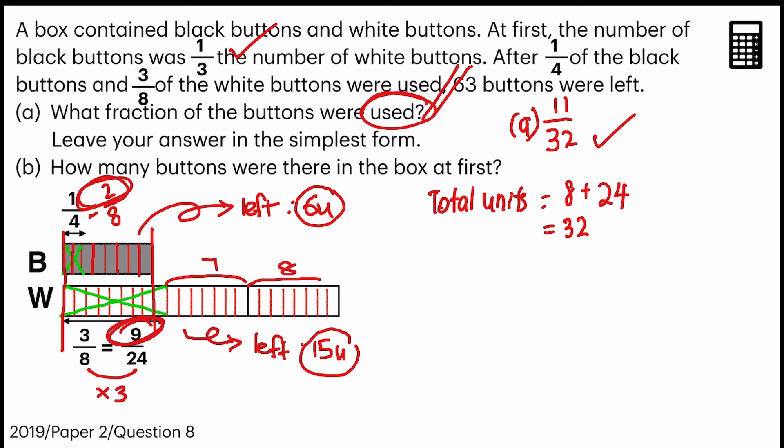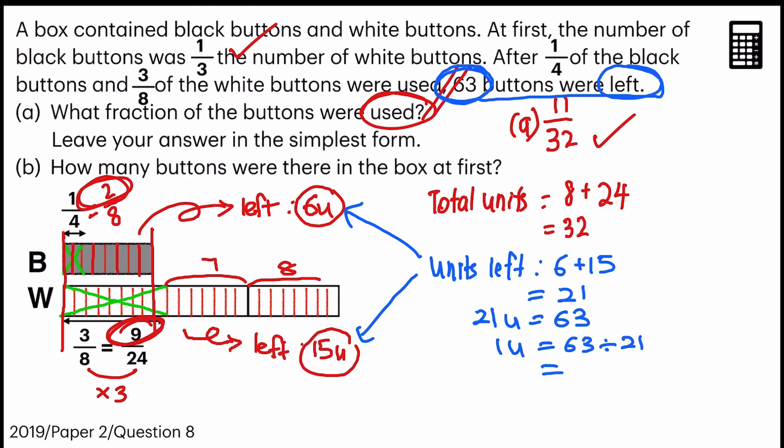Now for B. Let's use a blue color marker to solve it. How many buttons were there in the box at first? So to be able to solve it, we need to use the 63 buttons referring to the units that's left. So how many units left? We will have to use this tool to find out, which is 6 plus 15 giving us 21. So 21 units is equal to 63. One unit will be 63 divided by 21 giving us 3.